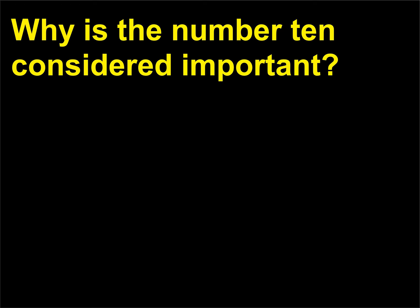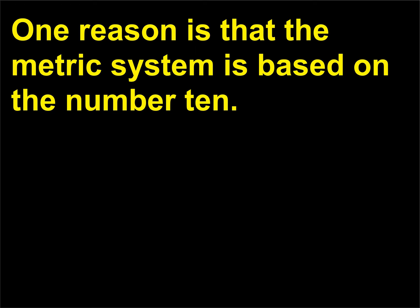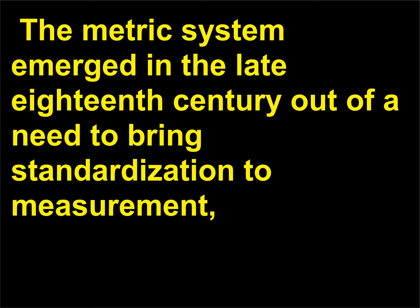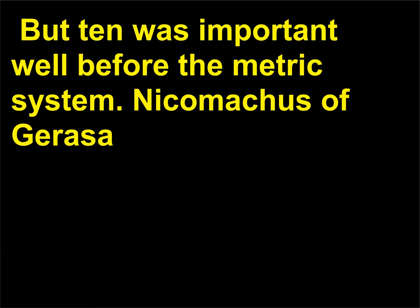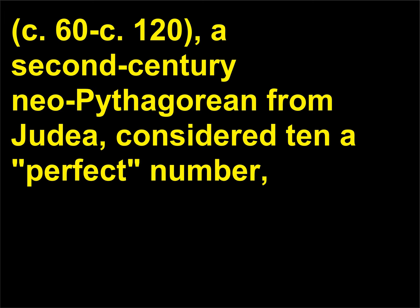Why is the number 10 considered important? One reason is that the metric system is based on the number 10. The metric system emerged in the late 18th century out of a need to bring standardization to measurement, which had up to then been fickle, depending upon the preference of the ruler of the day. But 10 was important well before the metric system. Nicomachus of Gerasa, c. 60–120 CE, a 2nd-century Neo-Pythagorean from Judea, considered 10 a perfect number.